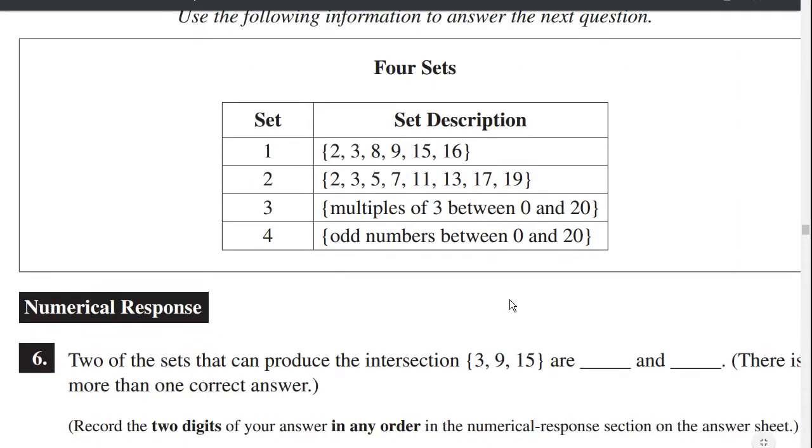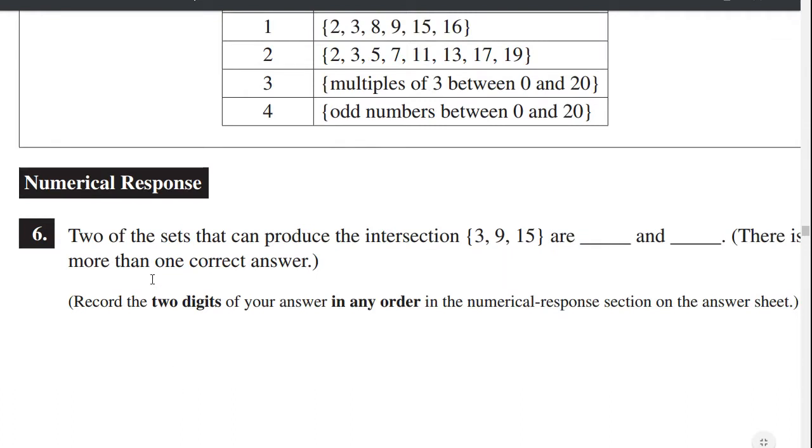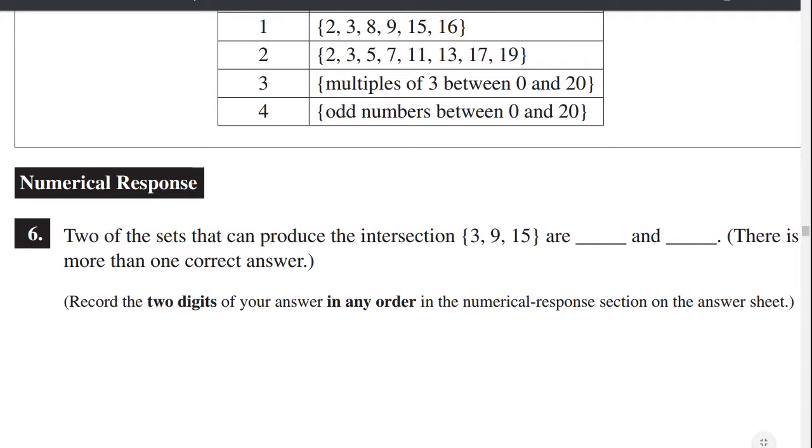So we use the following information to answer the next question. Four sets. Set 1: {2, 3, 8, 9, 15, 16}. Set 2: {2, 3, 5, 7, 11, 13, 17, 19}. Set 3: multiples of 3 between 0 and 20. Set 4: odd numbers between 0 and 20. Two of the sets that can produce the intersection {3, 9, 15} are blank and blank. There is more than one correct answer.